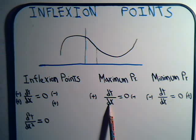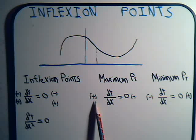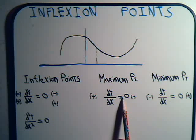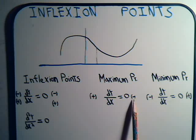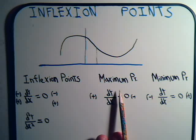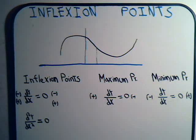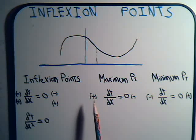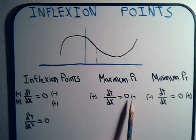Prior to that, the first derivative will have a positive value, and once you go past that point, it will have a negative value. So at the maximum point, there's a change in sign of the first derivative — or of the slope — between one side of the maximum point and the other side.